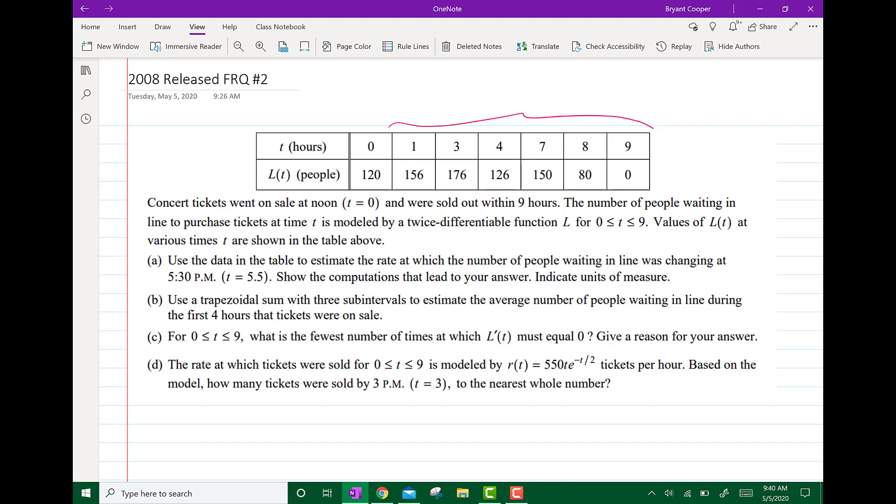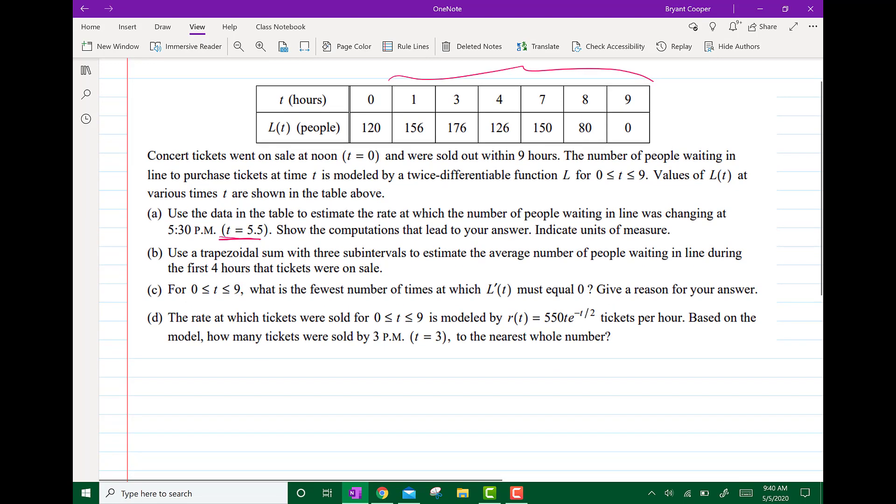So use the data in the table to estimate the rate at which the number of people waiting in line was changing at 5:30 pm or t equals 5.5. Show the computations and indicate the units of measure.